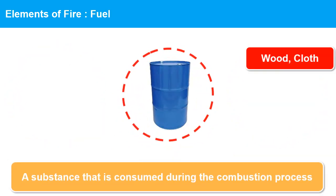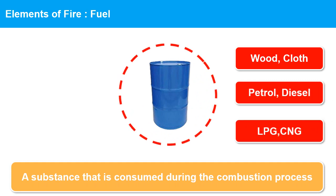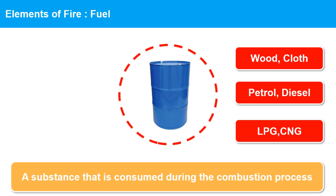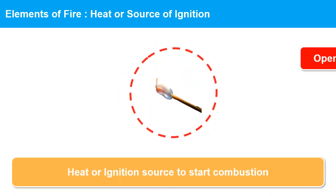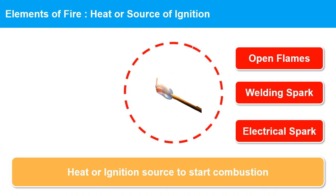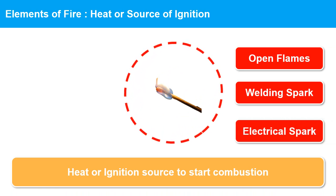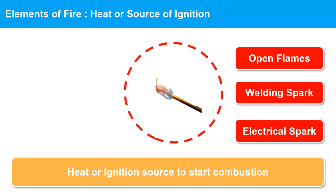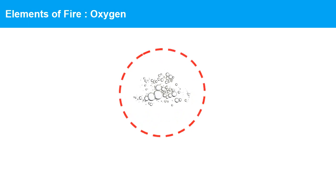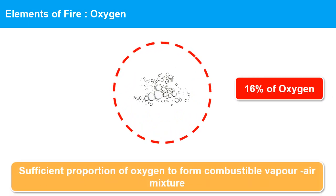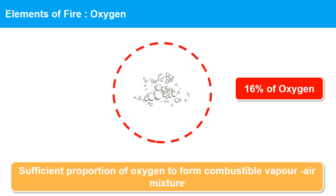Fuel is a combustible material or substance that is consumed during the combustion process. Examples are diesel, petrol, wood and oil. Heat or a source of ignition must be sufficient to initiate and propagate the chemical reaction for combustion. Examples include open flames, and spark from cutting and welding. Oxygen is consumed during combustion when it is chemically combined with the fuel. 16% of oxygen is needed to ignite a fire.